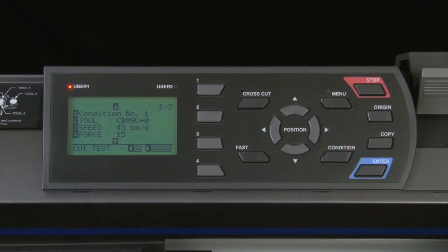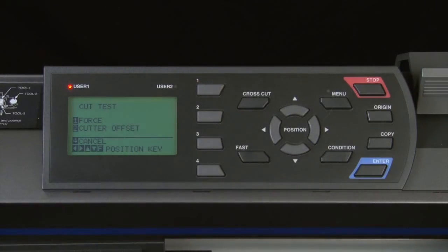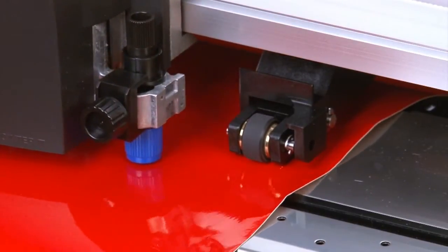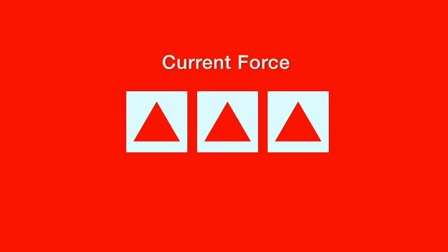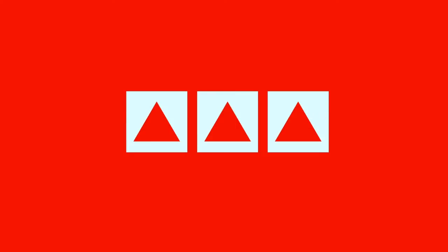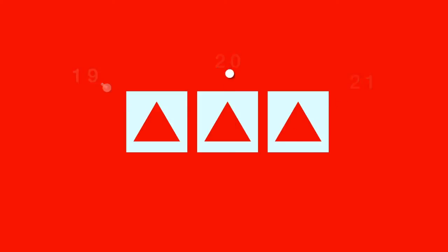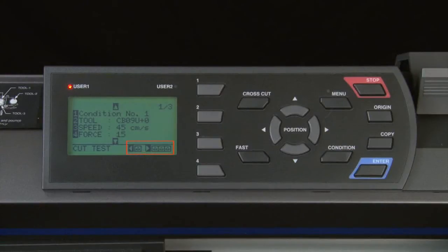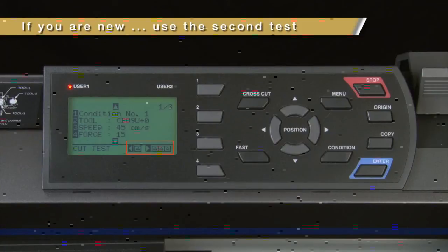The right arrow key will cut 3 patterns. Once pressed, a menu appears allowing you to check force or offset — in most cases force is the choice. The middle pattern is cut at the current force, the pattern to the left at the current force minus 1, and the pattern to the right at current force plus 1. For example, if force is set to 20, the patterns are cut at 19, 20, and 21. We suggest that if you're new to the FC 8600, use the three-pattern test until you become more familiar with its cutting characteristics.